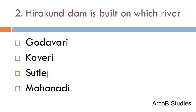Hirakud Dam is built on which river? Options: Godavari, Kaveri, Sutlej, or Mahanadi? The correct answer is Mahanadi.